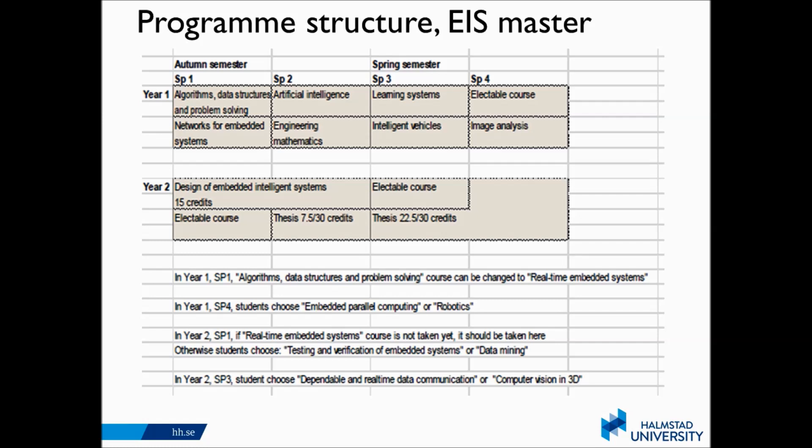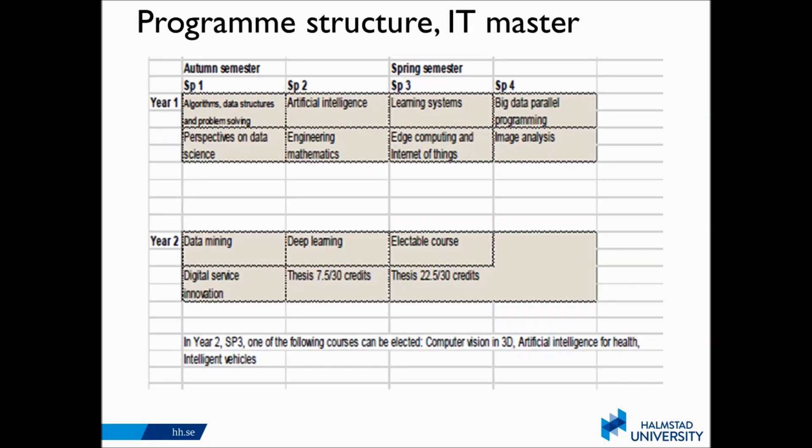There are many different options to choose from for electable courses, so you can look into that. For the Information Technology master, there are many shared courses, but here we focus not just on vehicles, but also on health and vehicles. There's also a course related to digital service innovation and a stronger focus on the intelligent systems aspect. You will have the same core courses in computer science and mathematics, and there's an electable course which you can look into.